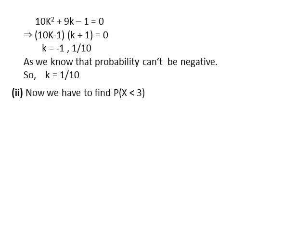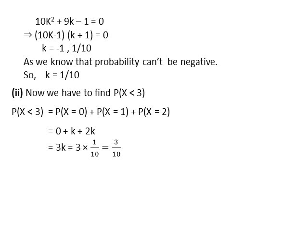In the second part, we find P(x<3). This equals P(x=0) + P(x=1) + P(x=2) = 0 + k + 2k = 3k. Putting k = 1/10, we get P(x<3) = 3/10.